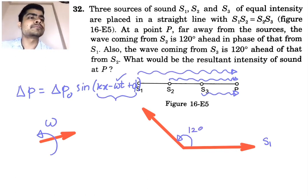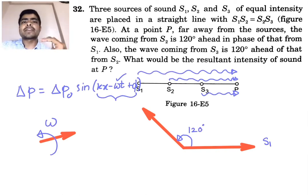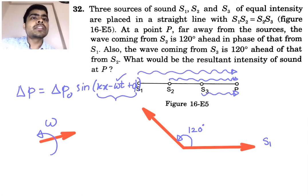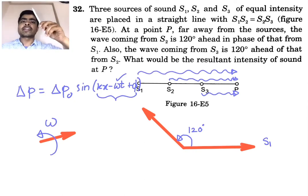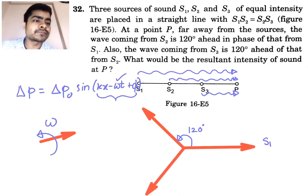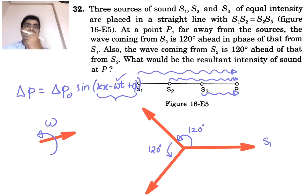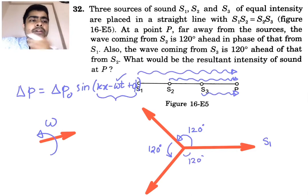S2 is already 120 degrees ahead of S1. The question also says S3 is 120 degrees ahead of S2, so S3 is in this direction — a further 120 degrees. Since these two angles are 120 degrees each, this third angle will also be 120 degrees.